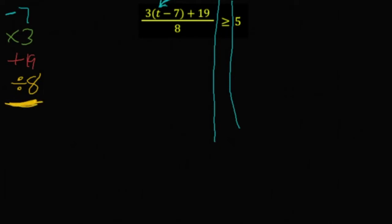You're going to undo those things in the opposite order. So, I'm going to undo divide by 8 with a times 8. I'm going to undo plus 19 with a minus 19. I will undo times 3 with a divide by 3. And I will undo minus 7 with a plus 7.